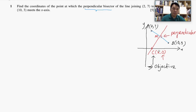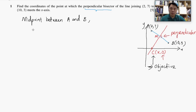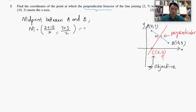Firstly, there are many ways to approach this. I would seek for the midpoint — so I will try to find the midpoint between A and B. The midpoint M has coordinates: x = (2 + 10)/2 and y = (7 + (-3))/2. Simplifying, that gives us M = (6, 5). We have managed to find the coordinate for the midpoint.